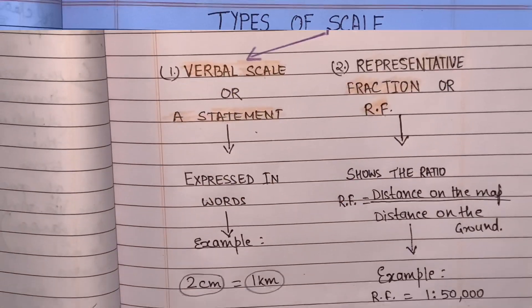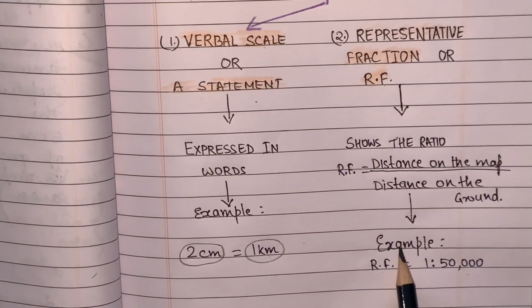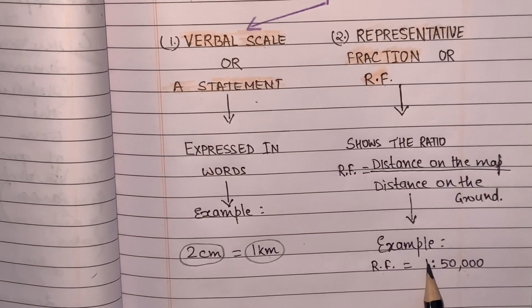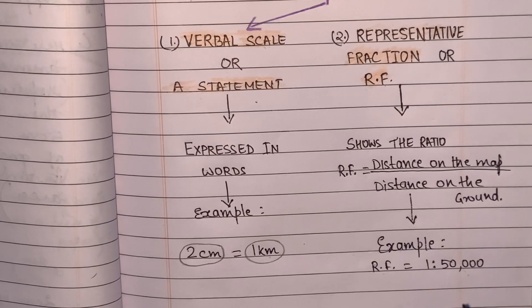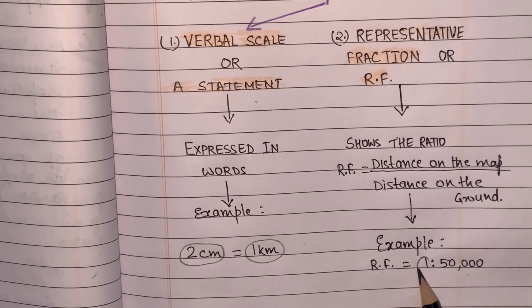For example, if R.F. equals 1:50,000, it would mean that 1 centimeter on the map represents 50,000 centimeters on the ground.